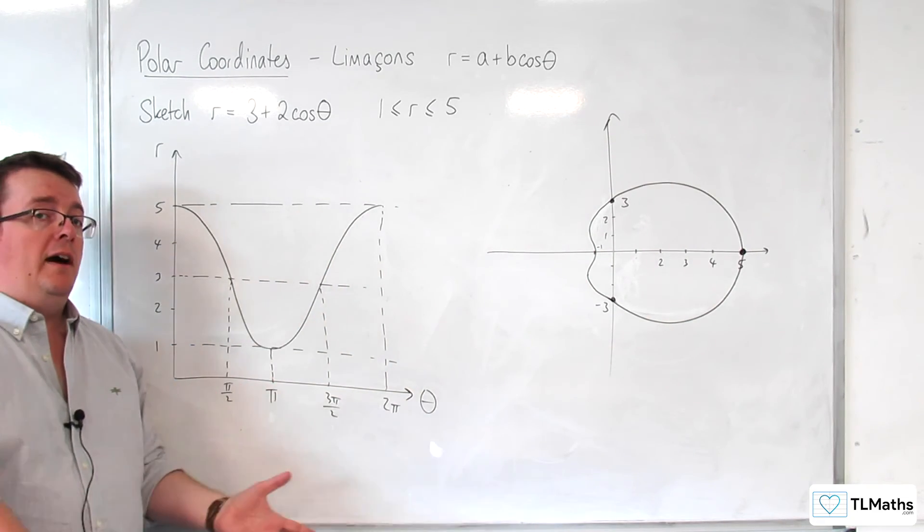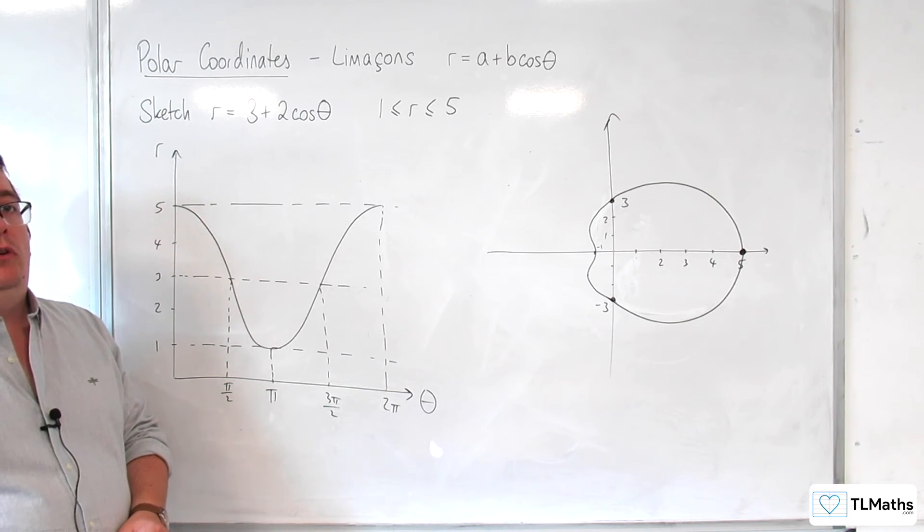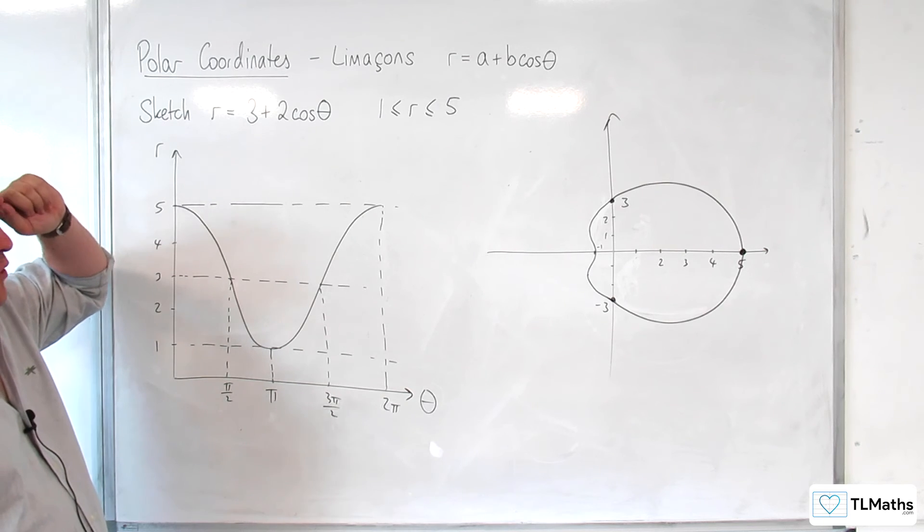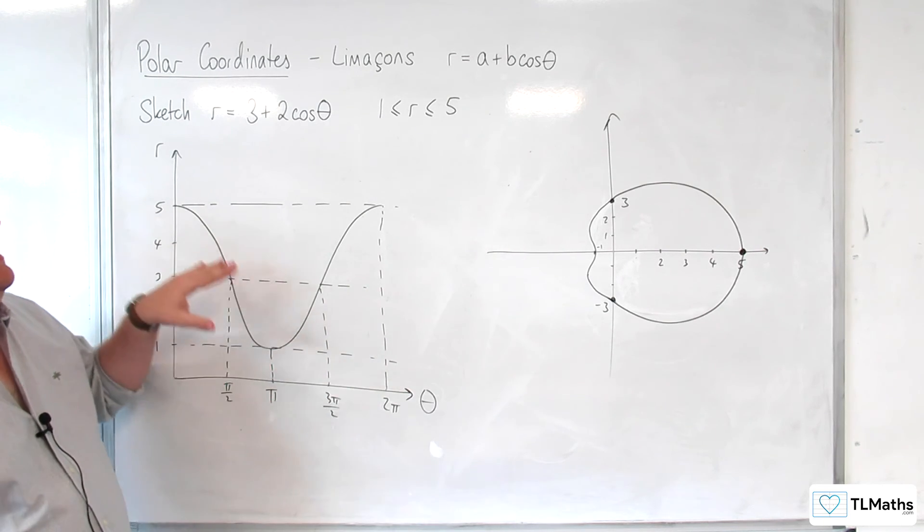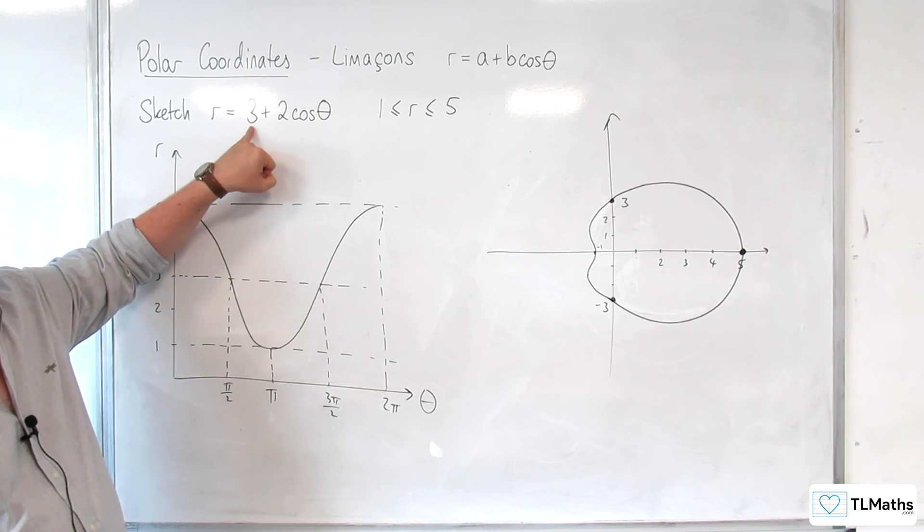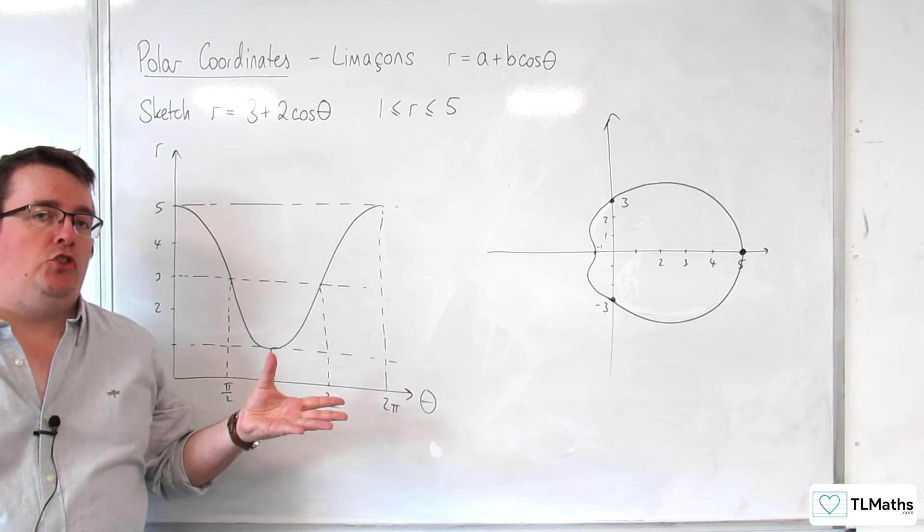And so you get this type of curve where you have this dimple at the point when theta is pi, rather than the cusp that we saw in the previous video when A and B were equal.